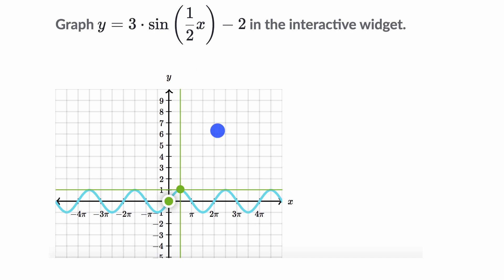And so one way to think about it is your period is now going to be twice as long. So instead of getting to this next maximum point at π/2, you're going to get there at π. And you could test that. When x equals π, this will be 1/2 π. Sine of 1/2 π is indeed equal to 1.